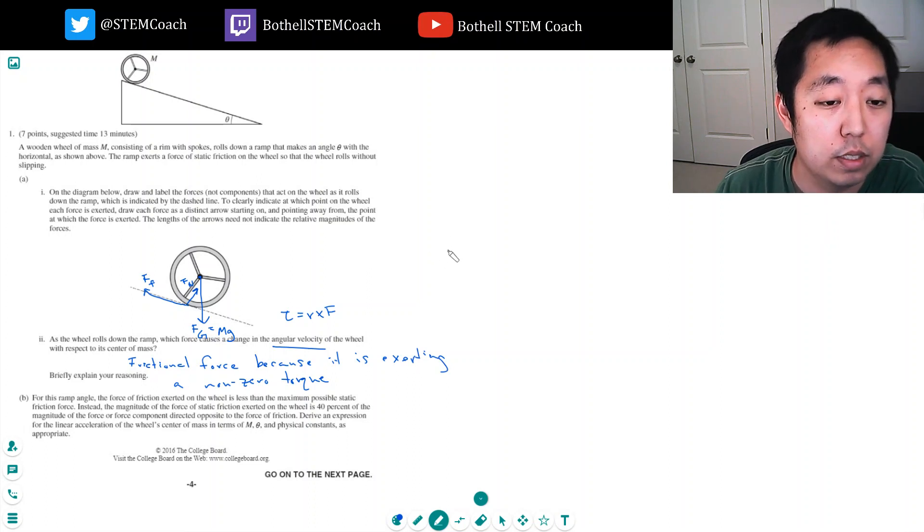Okay, so now I've got to actually set up this free body diagram and solve it. So let's look at this. Here I have, I always wanted to set up a direction, right? Perpendicular to the plane is the y direction. Parallel to the plane is the x direction.